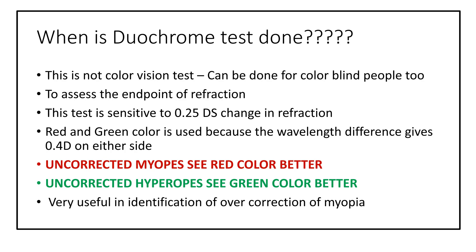The red and green colors are used because the wavelength difference gives 0.4 diopters on either side, making it easy to judge whether the correction is over or under. In an uncorrected myope, the patient sees the red side better, whereas in an uncorrected hyperope, they see the green side better. This makes it essential for identification of the correct endpoint in myopia correction.